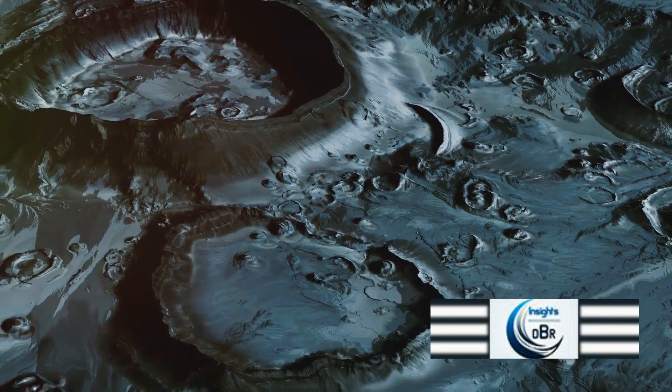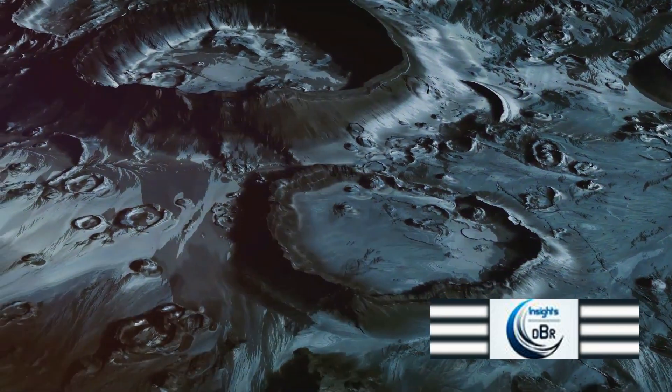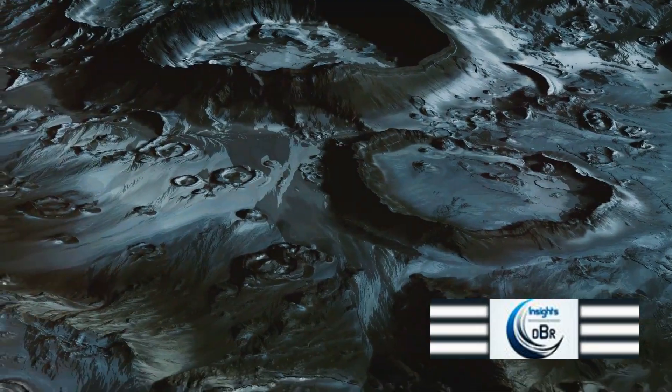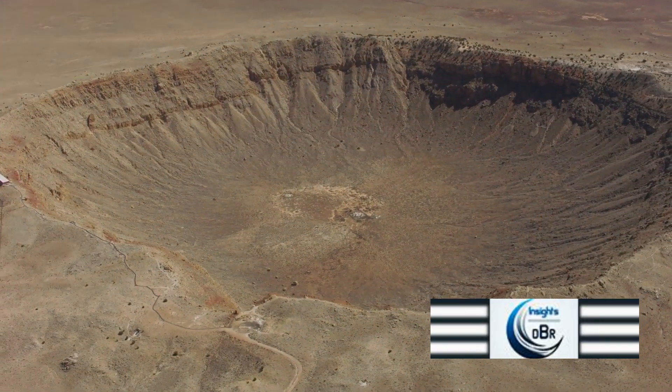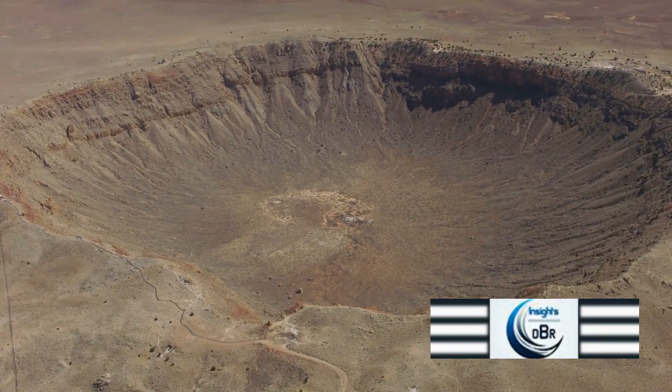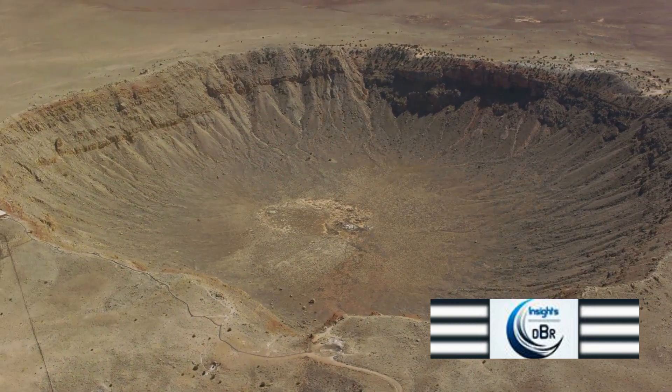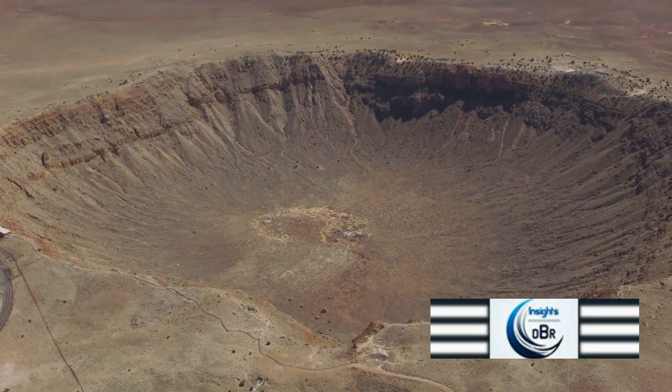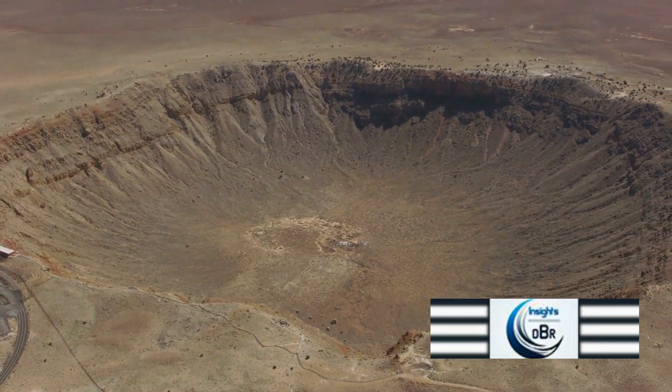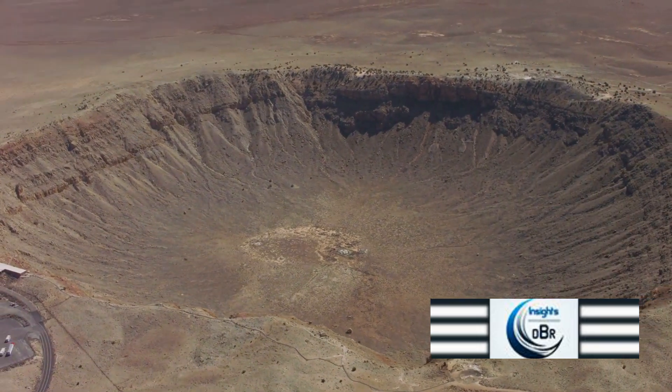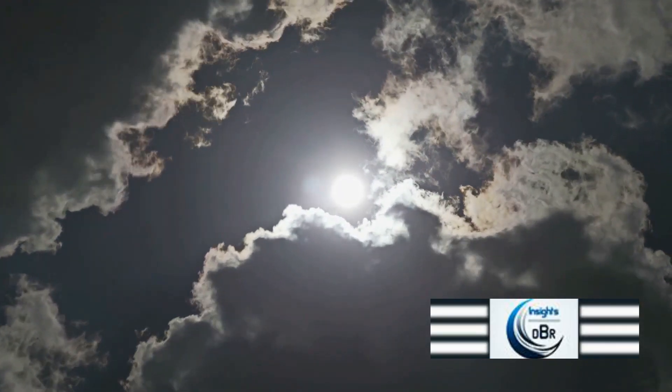The energy of the impact doesn't stop there. It excavates a crater, a gaping hole in the Earth's crust, potentially several miles wide and deep. The ground shakes violently, and a shockwave radiates out from the impact site, traveling at supersonic speeds. This shockwave flattens everything in its path, causing widespread destruction, but the spectacle doesn't end there.